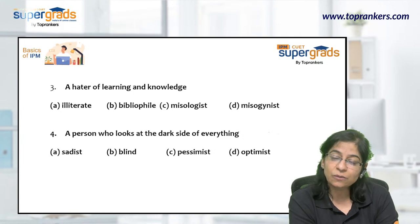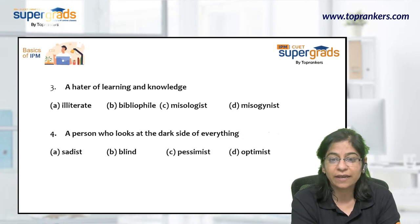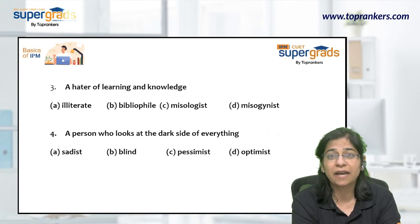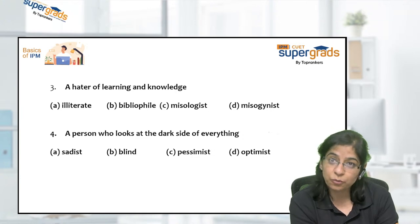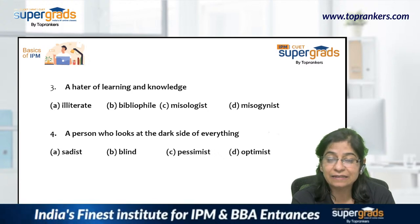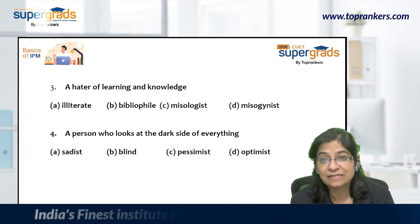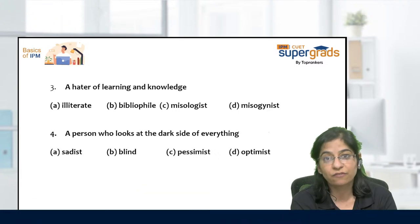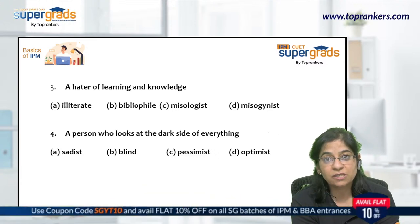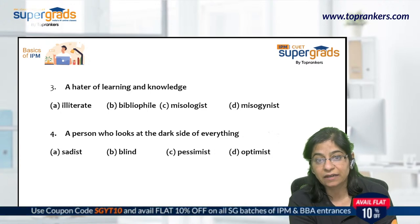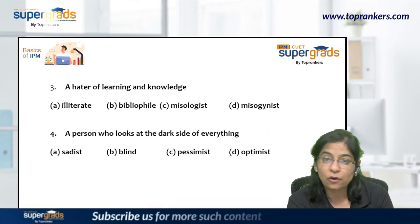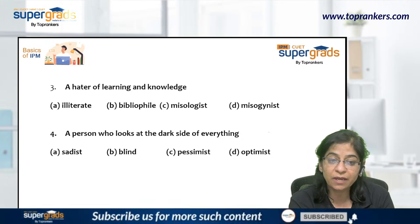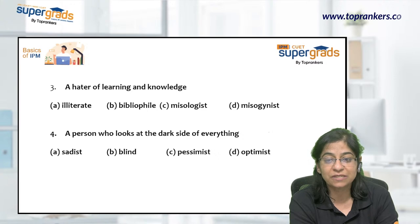There is also the word misogynist. 'Miso' again means hatred, and 'gyn' means women. So misogynist means somebody who hates womankind. Now we know the meanings of all four words. The answer to 'a hater of learning and knowledge' is option C — misologist.